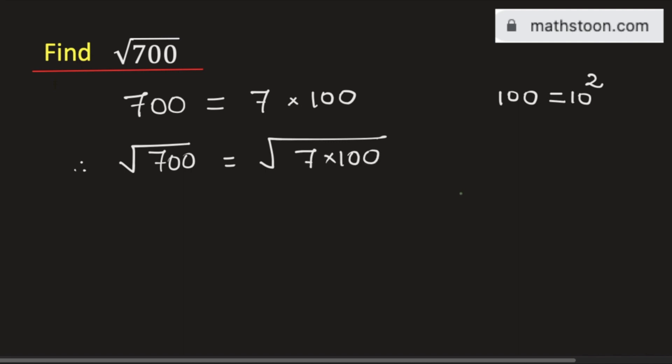Now we will apply the formula: √(A times B) is equal to √A times √B. Applying this formula here, this can be written as √7 times √100.